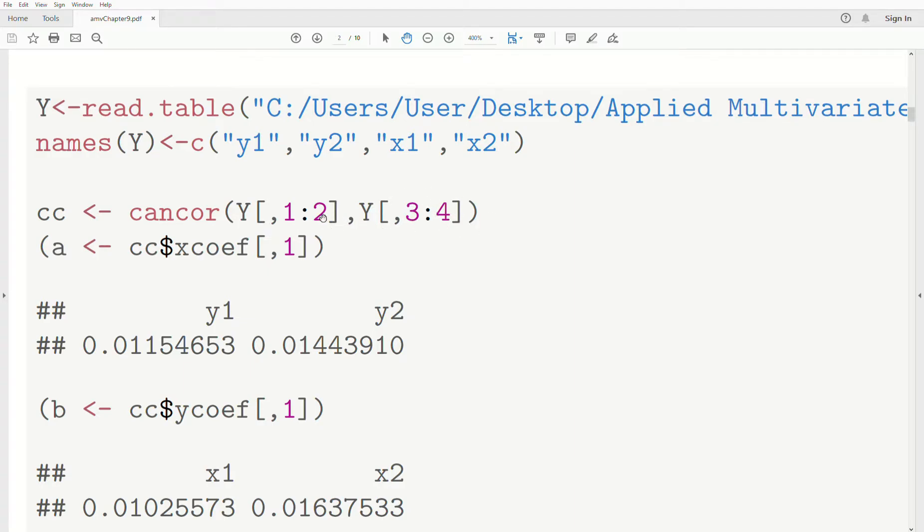Now they don't have to be two and two. It could be three and nine or four and five. Different number of variables in each. It's just here there's two and two.